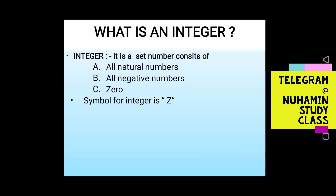The symbol for the integer is Z. For example, the whole number is equal to W, the natural number is equal to N, and the integer is equal to Z.